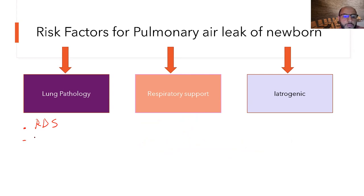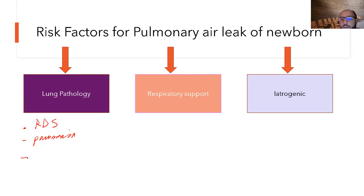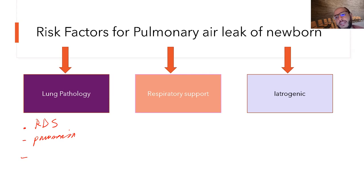Pneumonia is another cause. Inflammatory markers and exudate damage the alveoli. The tissue becomes very fragile with inflammation, and as you try to provide respiratory support and go up on settings because the baby still requires higher oxygen, the inflamed fragile lungs are at risk of pneumothorax.